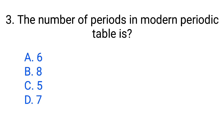Question number 3. The number of periods in the modern periodic table is. Option A: 6. B: 8. C: 5. D: 7. The correct answer is option D, 7.